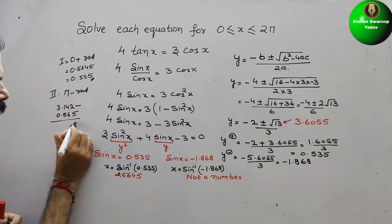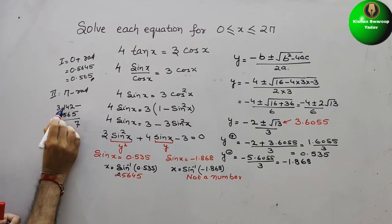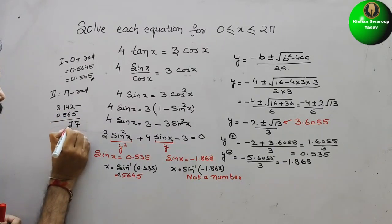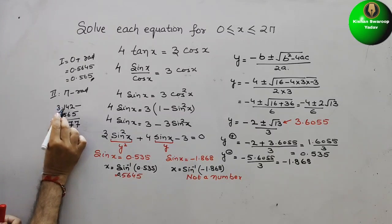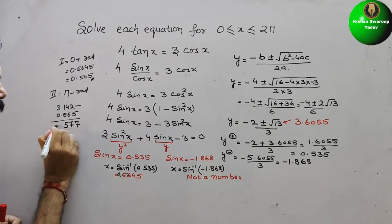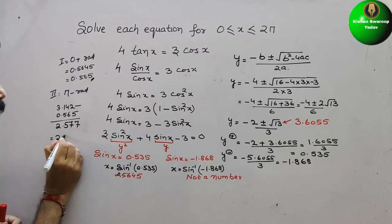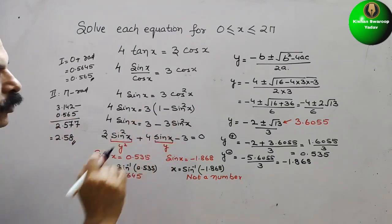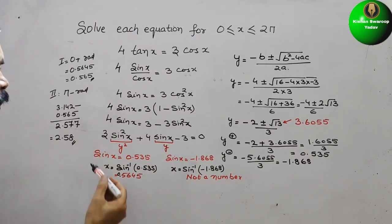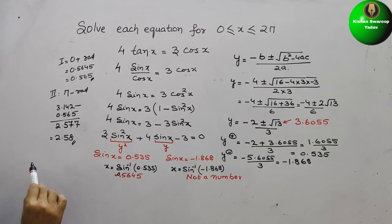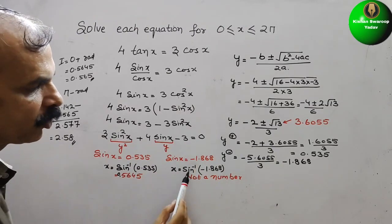If you subtract, you will get approximately 2.58. So there are only two solutions for this: first is 0.565 and second is 2.58. The second y value (sin(x) = −1.868) does not exist, so it is discarded.